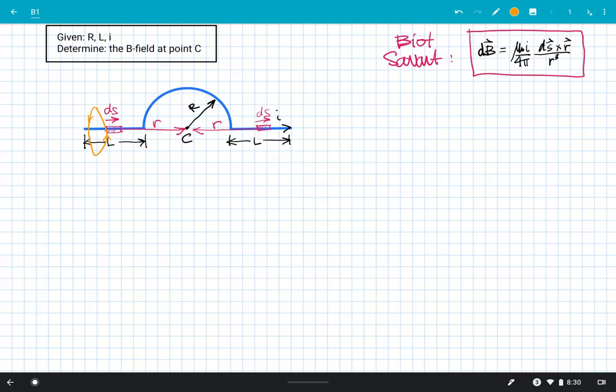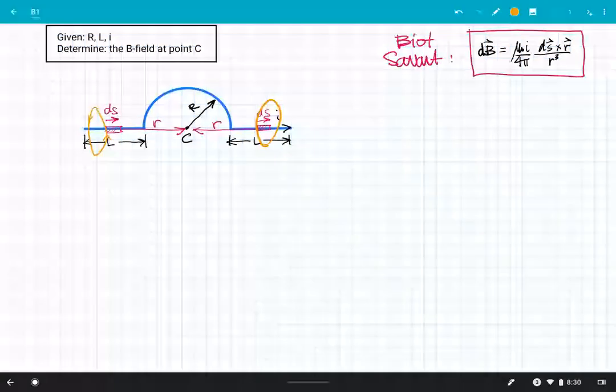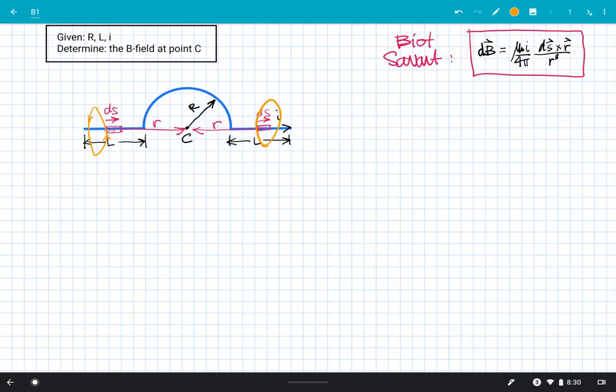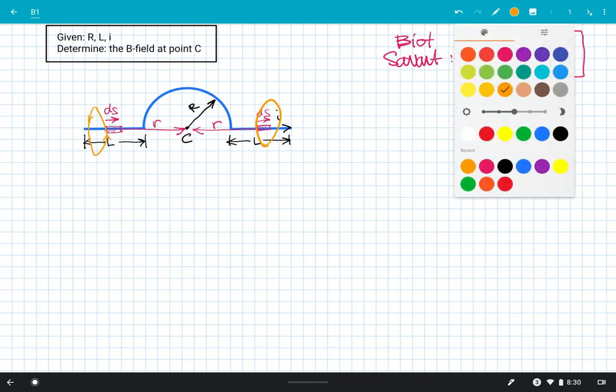It really helps your brain if you're actually executing right hand rule right in front of your face so you can see what's going on in three dimensions. One way that I can know that those straight segments physically don't contribute is I see that they're going to contribute in the section above and below the straight segments of wire, but they're not going to contribute left and right, so they wouldn't contribute at point C.